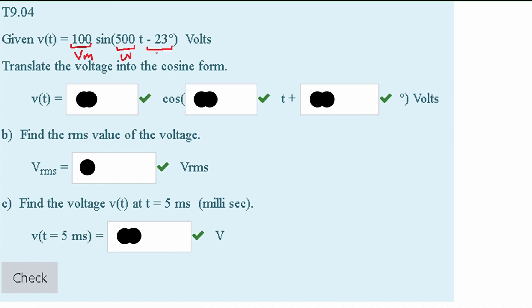When we convert to cosine from sine, we know that our V max and our omega are going to stay the same.